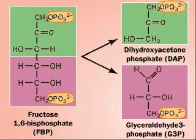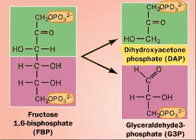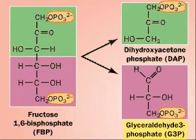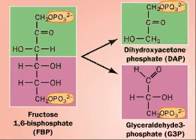Aldolase splits FBP into two 3-carbon sugars: dihydroxyacetone phosphate (DAP) and glyceraldehyde-3-phosphate, or G3P. These molecules are now ready to enter the exergonic reactions that produce pyruvate.